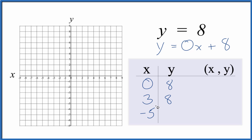So let's just say negative 5. We have 0 times negative 5, that's 0, so y is 8. So these are the points that we'll graph for the equation y equals 8.